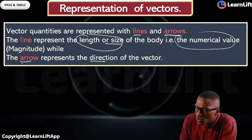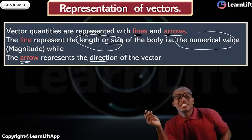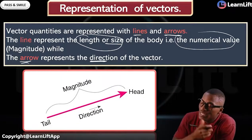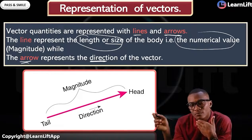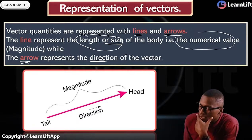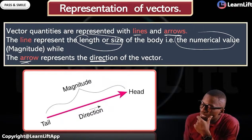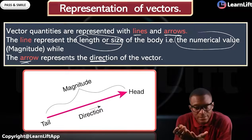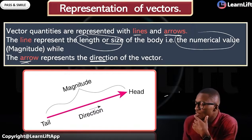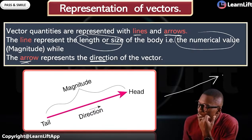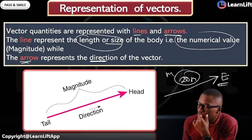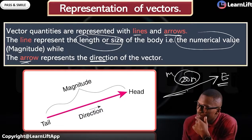The arrow represents the direction while the line represents the numerical value or size. For example, on a diagram you can see the head and tail, which show the arrow. The arrow signifies the direction while the line shows the magnitude — the size. So if I draw a line going eastward — say 20 meters — the 20 meters is the magnitude and the arrowhead pointing east is the direction.